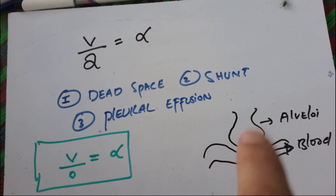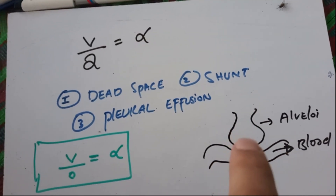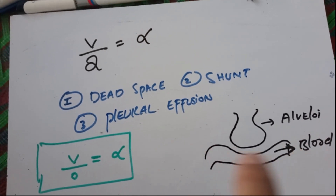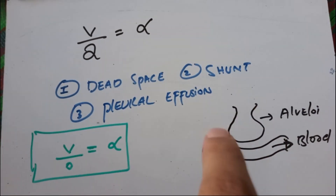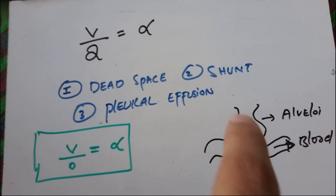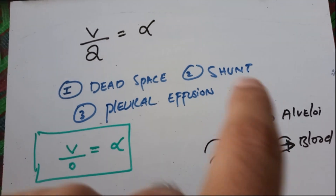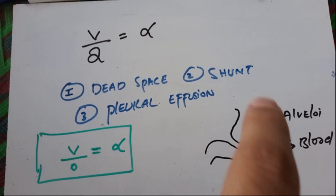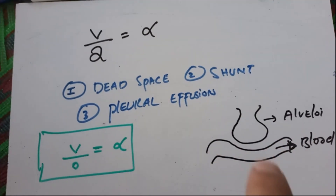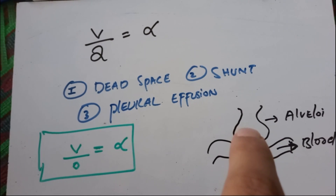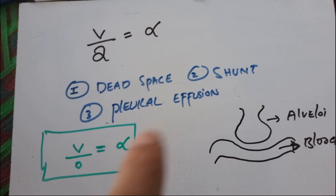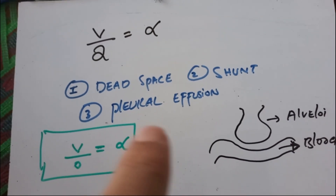Anything causing a problem in the blood will cause the amount of air in the alveoli to not take part in oxygenation — that is dead space. So, anything causing a problem in the lungs causes shunting, and anything causing a problem in the blood causes dead space. We already know that anything divided by zero gives infinity — whether 2/0 or 3/0.